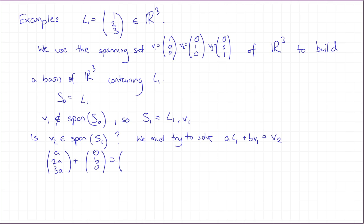This is supposed to be equal to V2, which is (0,1,0). So what have we got there? A plus B, 2A, 3A is equal to (0,1,0). And you can already see that this is impossible. The second row would require A equals 1/2. The third row requires A equals 0. So this is impossible. There are no solutions. You cannot write V2 as an element of the span of S1. So V2 is not in the span of S1.